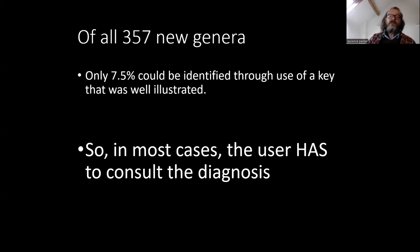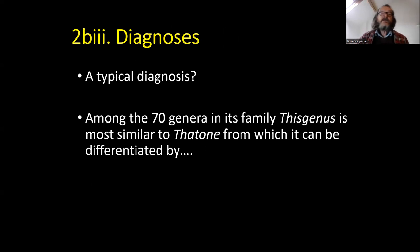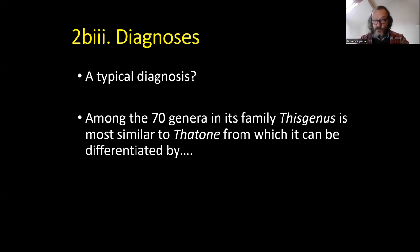So in most cases, the user thinking they might have this organism has to go to the diagnosis. This is the kind of thing that made me want to look at this in the first place — a typical diagnosis: there are 70 genera in the family, and this one can be told from that one by this. It's most similar to this one. So you've got a specimen, you think it might be the new genus, and you've only got 69 of the 70 genera in your synoptic collection. I don't have that one, so I can't tell whether this one is most similar to it, despite having an almost complete generic-level synoptic collection.